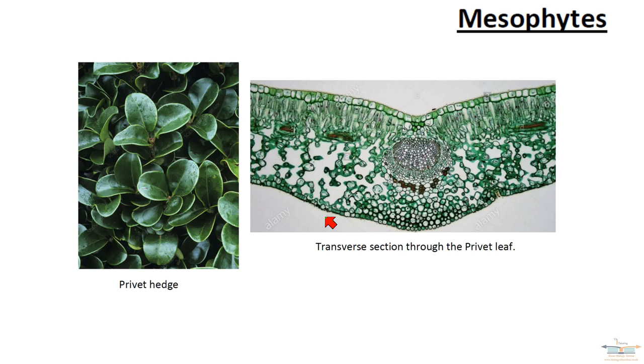The other thing that the privet and other mesophytes do is lose their leaves during winter months. The loss of leaves is called abscission. During winter, there could be less water around — it could be in the form of ice or snow — so there could be less liquid water available. The loss of leaves by abscission can obviously reduce transpiration and water loss.